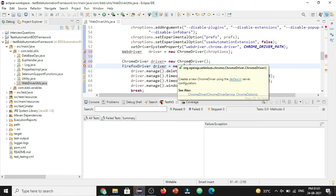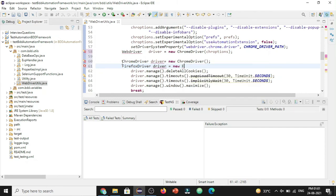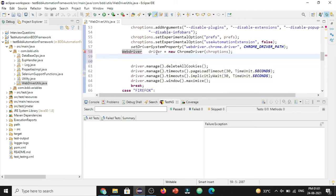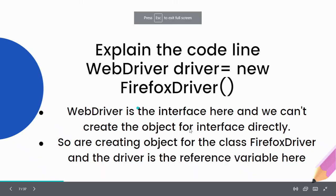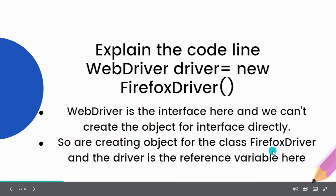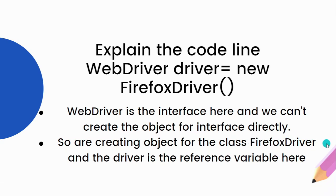When we use `WebDriver driver = new ChromeDriver()` or `WebDriver driver = new FirefoxDriver()`, we are creating the object for the WebDriver interface instead of the individual browser drivers. By creating the object of the WebDriver interface we can run multiple browsers without creating separate objects for each. FirefoxDriver is the class implementing the WebDriver interface, so we use it to create the object of that interface.